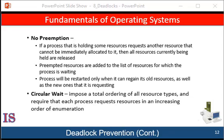The third necessary condition for deadlocks is that there be no preemption of resources that have already been allocated. To ensure that this condition does not hold, we can use the following protocol: if a process is holding some resources and requests another resource that cannot be immediately allocated to it — that is, the process must wait — then all resources the process is currently holding are preempted, meaning they are implicitly released. The preempted resources are added to the list of resources for which the process is waiting, and the process will be restarted only when it can regain its old resources as well as the new ones it is requesting.